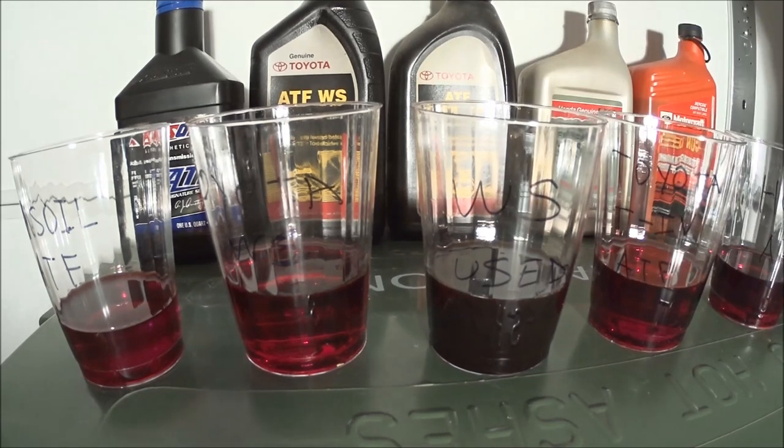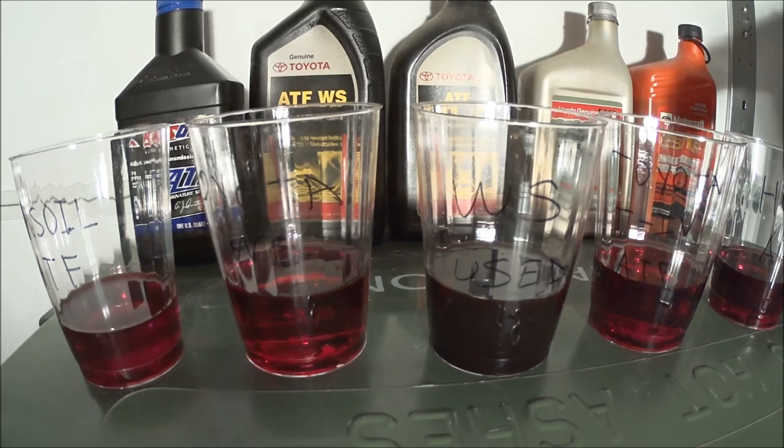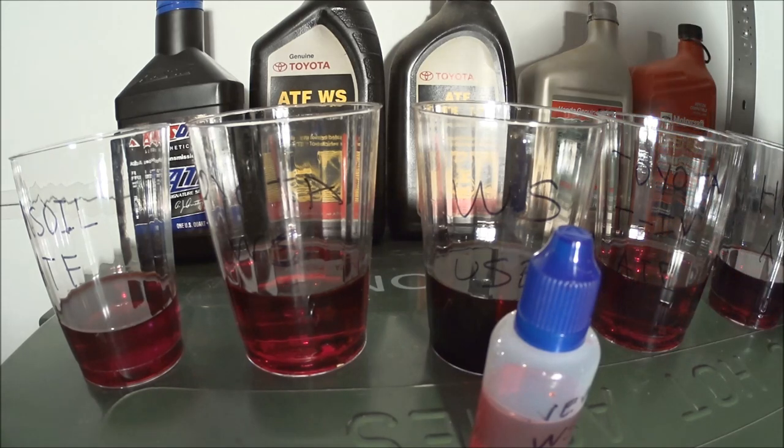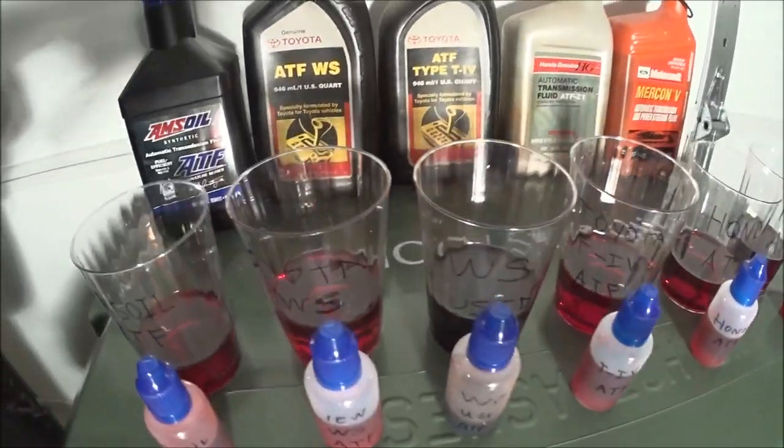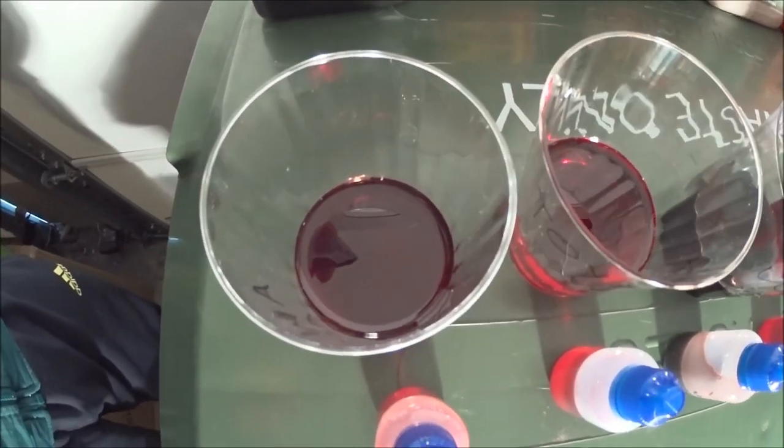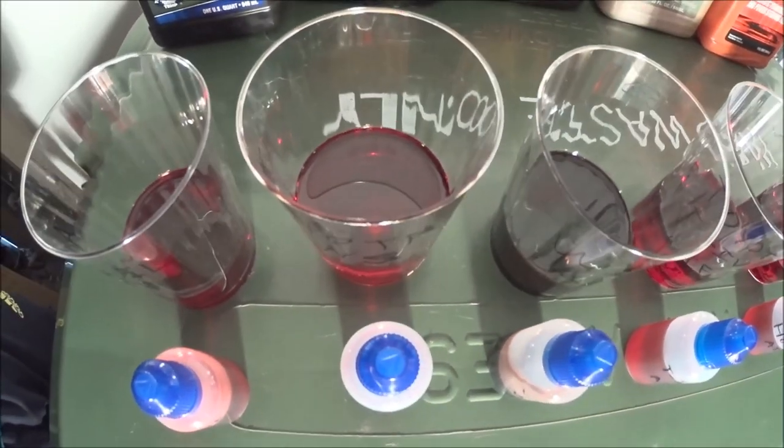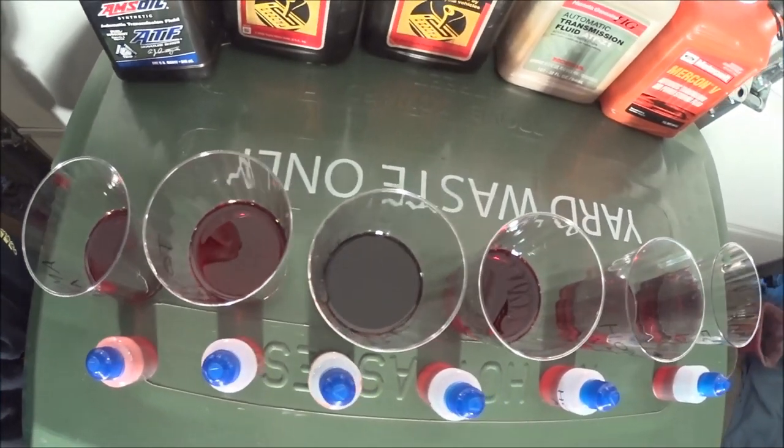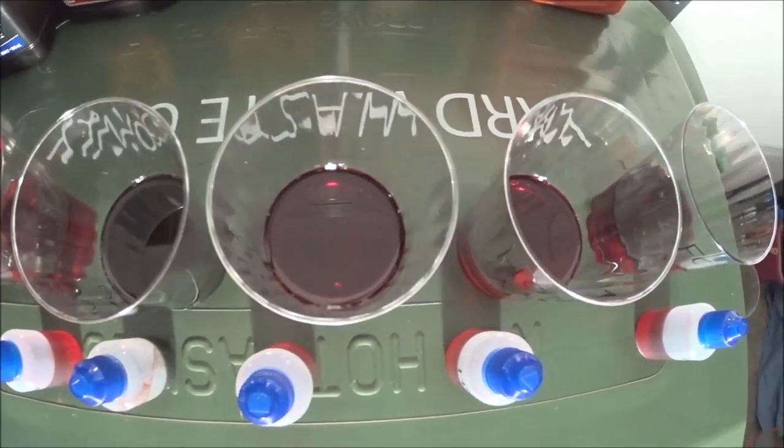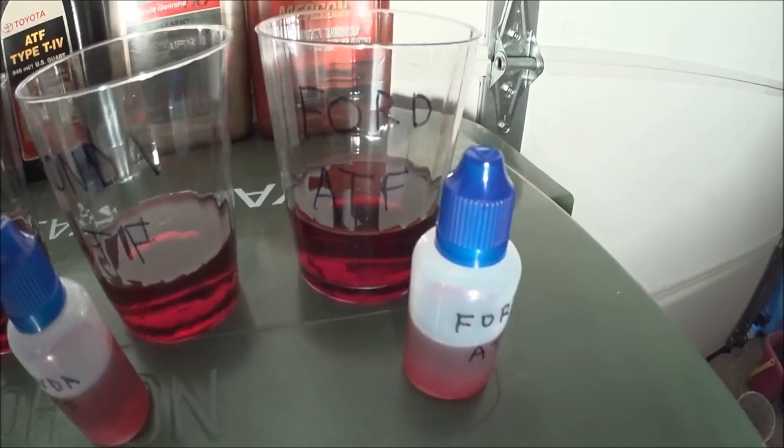So these are the four different samples that I have. And I have a little bottle of steel that I'm going to actually demonstrate the actual cold flow. Let's see the color difference. Here is M-soil fluid color. WS color. And they go into Type 4. This is used WS, Type 4, Honda and Ford Mercon 5 transmission fluid.